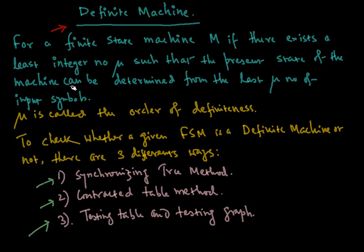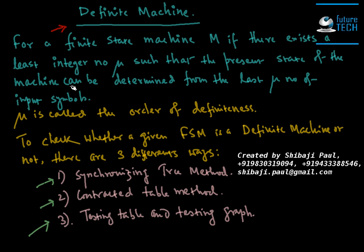A definite machine is a finite state machine with order of definiteness mu, such that mu is the least integer. By knowing mu number of inputs exactly, we can determine the present state of the machine. If mu is the order of definiteness, then mu number of input symbols exactly determines the present state of the machine.